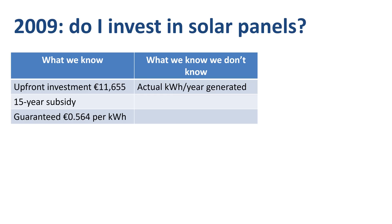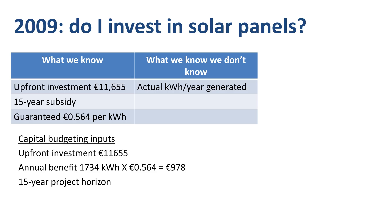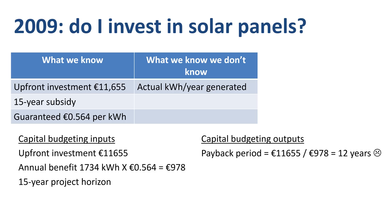What I obviously didn't know at the time — and was aware I didn't know — was the actual kWh that solar panels on my roof would generate. I took the capital budgeting inputs of the upfront investment amount, the expected benefit per year, and the 15-year time horizon, and calculated a payback period of 12 years, an NPV of just €20, and an IRR of 3.02%.